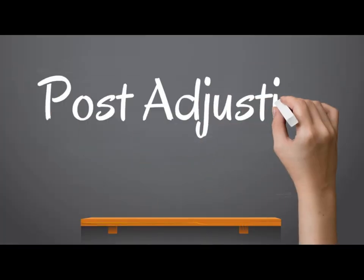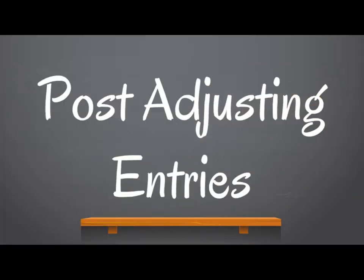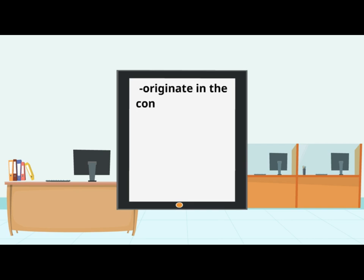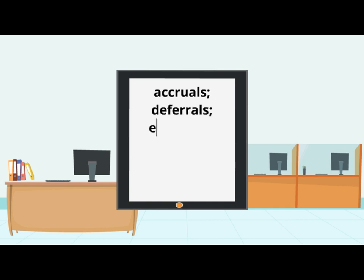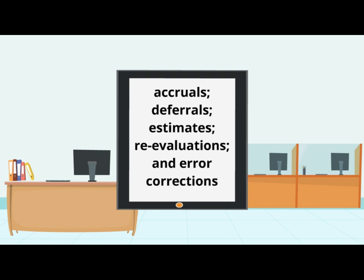Adjusting entries originate in the controller's office at the end of each accounting period and after the initial trial balance has been prepared. The trial balance lists the balances for all of the General Ledger accounts. There are five types of adjusting entries: accruals, deferrals, estimates, re-evaluations, and error corrections. Journal vouchers for adjusting entries should be stored in the journal voucher file.